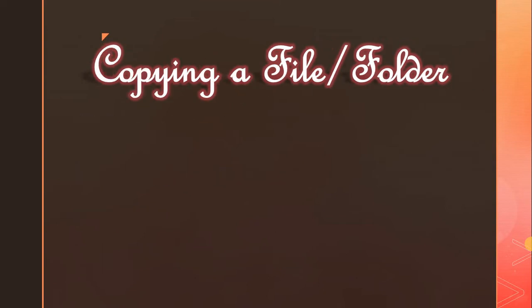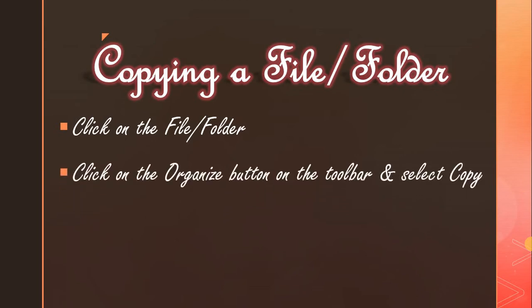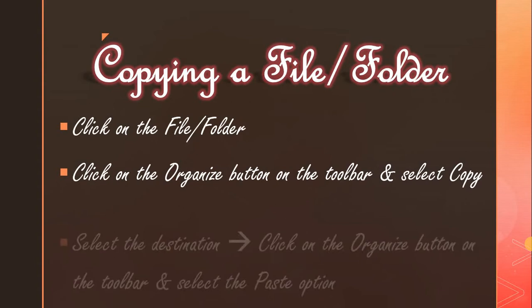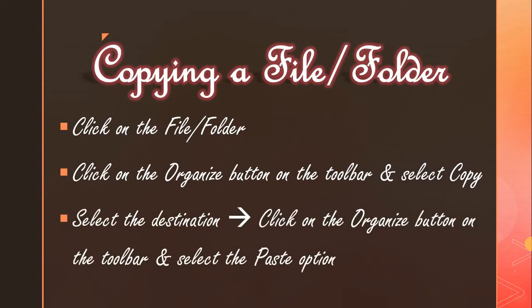Next, copying a file or folder. To copy a file or folder, select that file or folder, then click on the Organize button in the toolbar. Select the Copy option from the drop-down menu, then select your destination where you need to paste the file or folder, click on the Organize button, and select the Paste option. Another way is by right clicking on the file or folder, selecting Copy from the short menu, then going to the destination, right clicking, and selecting Paste.